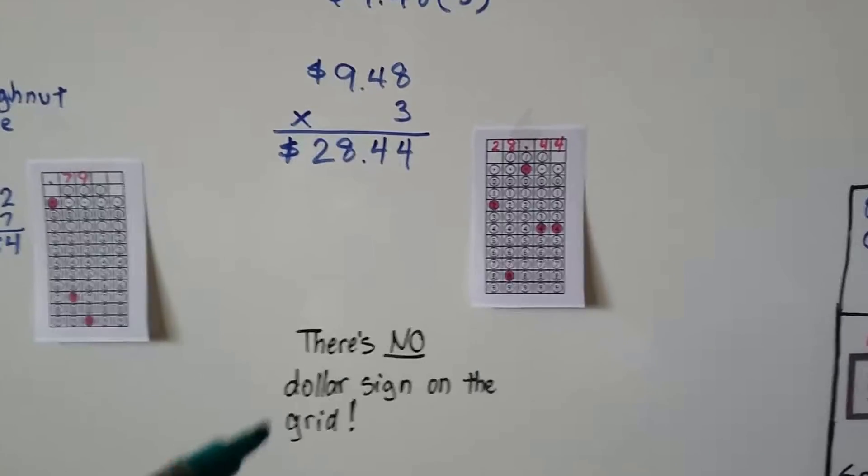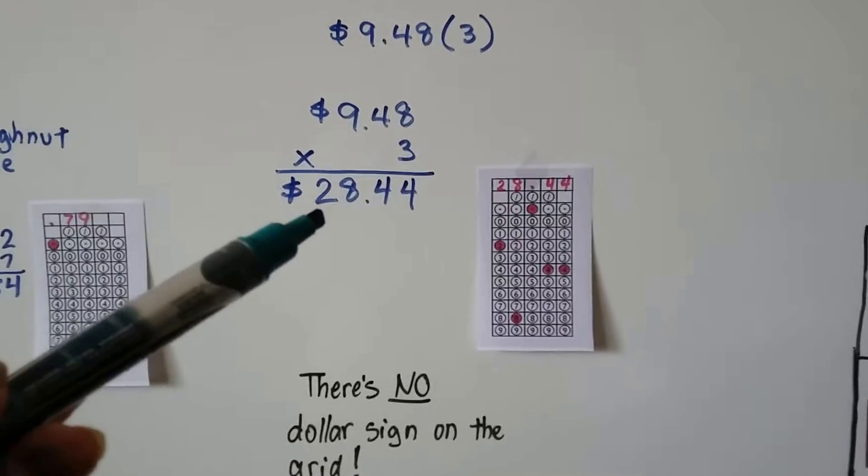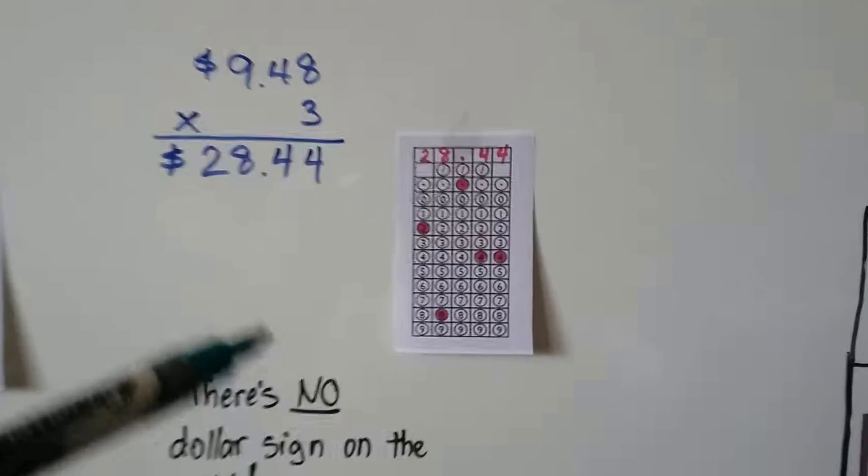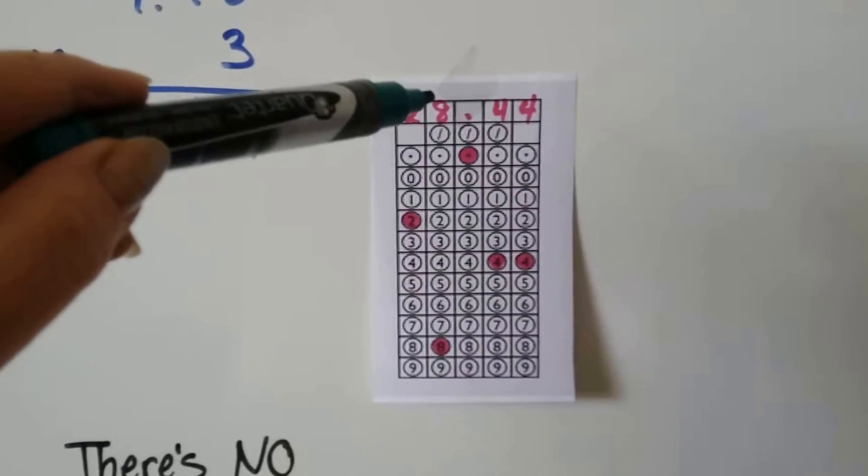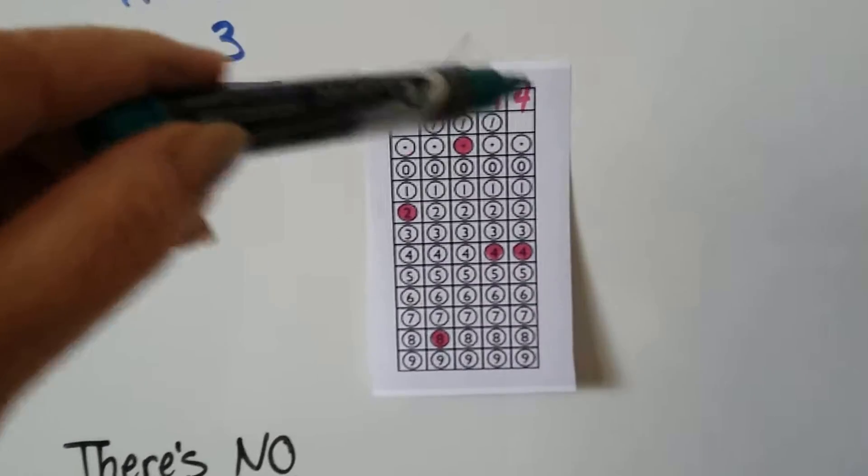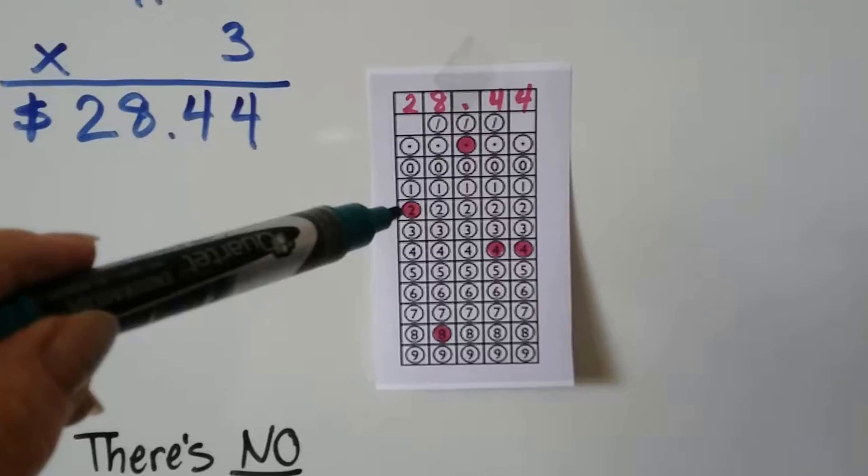Now there's no dollar sign on the grid. So we've got 28.44 and that's how we fill it in. We fill in a 2, an 8, the decimal point, the 4, and the 4.